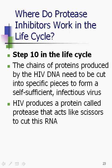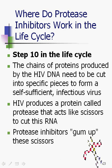HIV produces a protein called protease that acts like scissors to cut the RNA. Protease inhibitors stop that enzyme — they gum up the scissors. I always think of it like a department store: HIV is trying to leave the CD4 cell, but it needs to stop at the gift shop to wrap itself up nicely to be infectious for the next CD4 cell. If the gift shop is closed, HIV can't leave. So protease inhibitors gum up the scissors that HIV uses to get out.